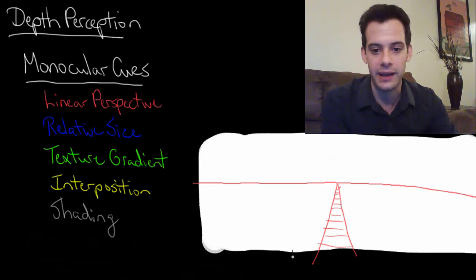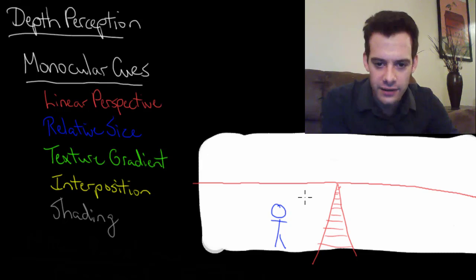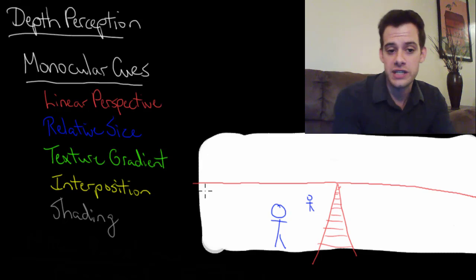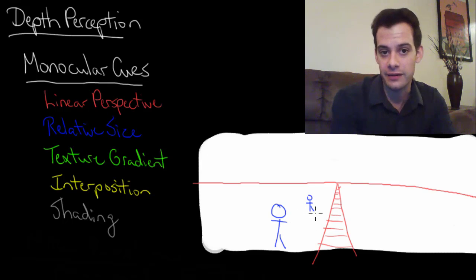Now we'll expand on that by drawing some people here. So here's one person here and here's another person here. Using this idea of relative size we see that this person feels closer to us. It could be the case that this is a tiny person floating in the air next to this person but that's not probably how you're going to perceive it. You're going to just assume that this person is about the same size as this person just farther away and therefore the image on your retina is much smaller.